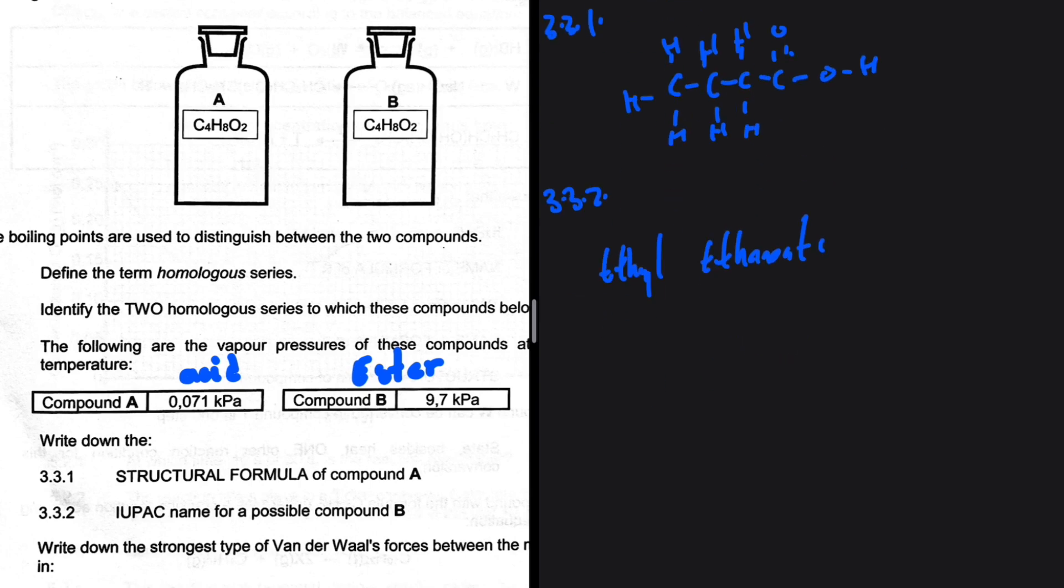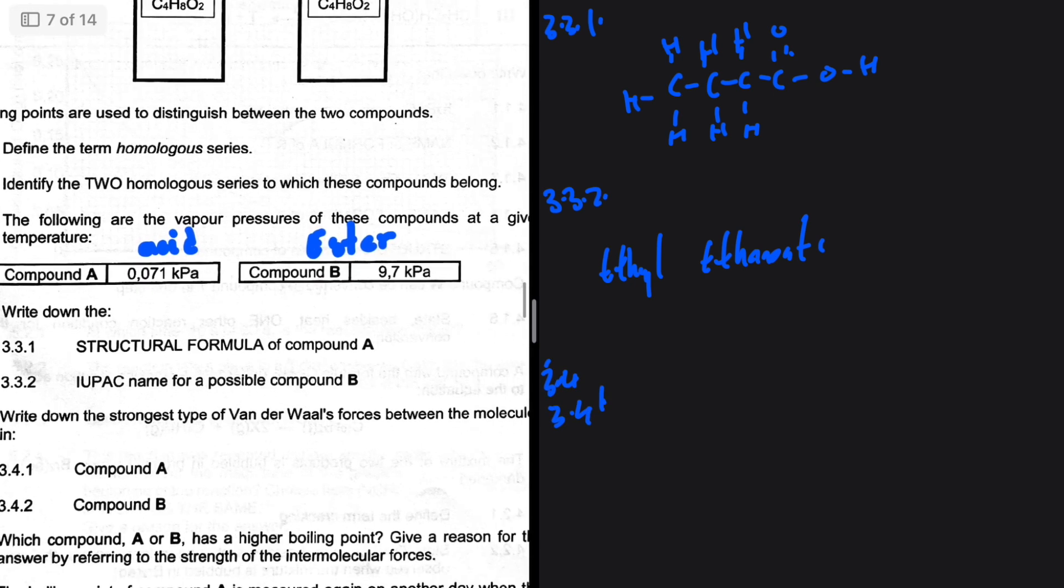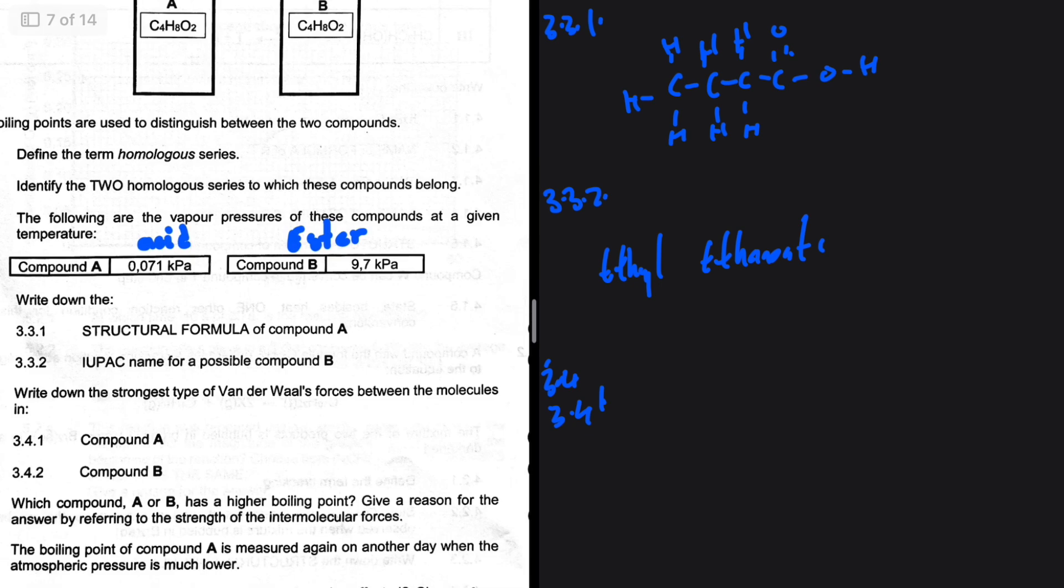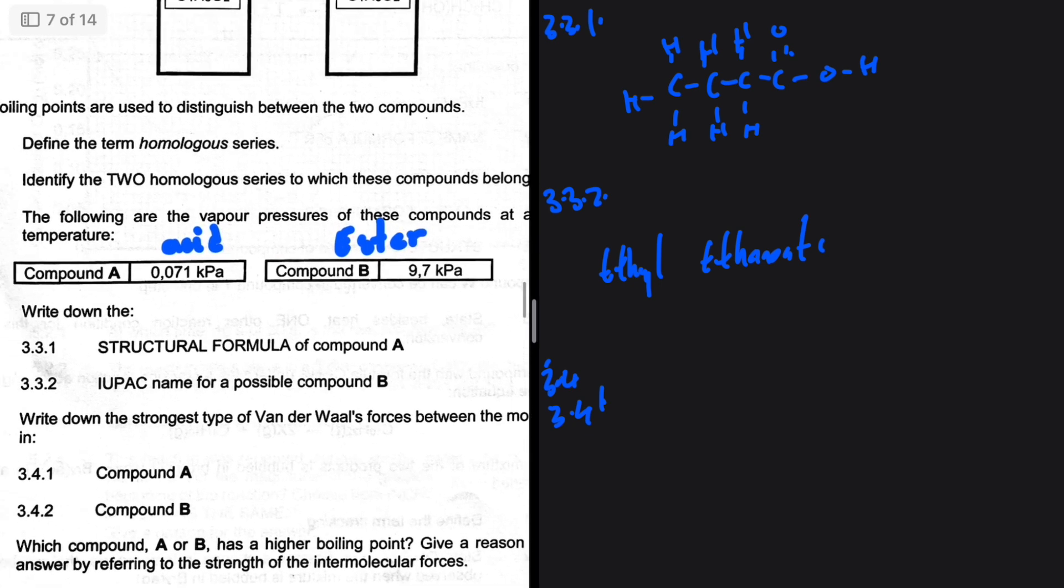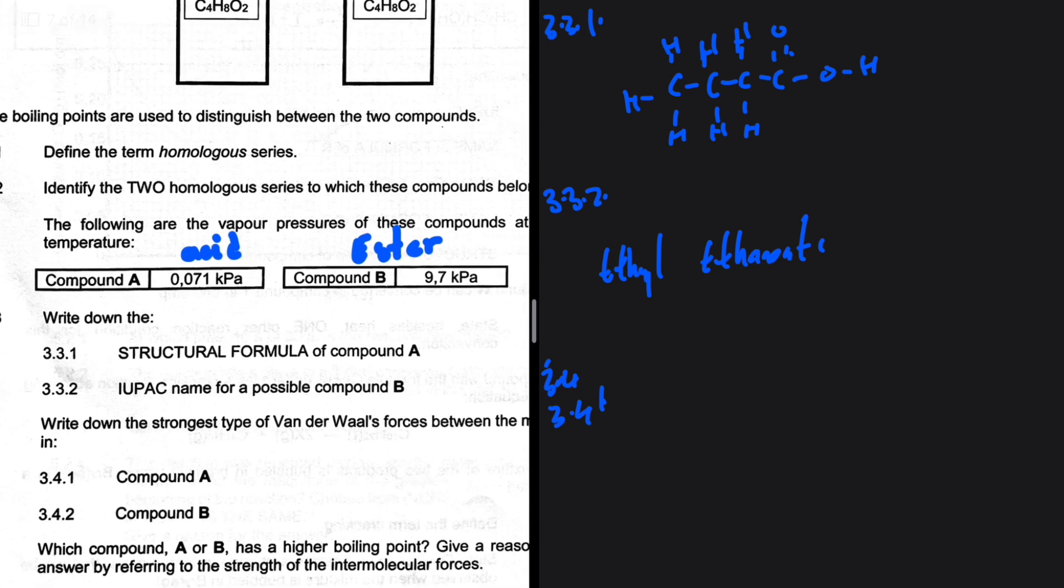3.4.1 write down the strongest type of Van der Waals forces between the molecules in compound A. So compound A is an acid, so the strongest intermolecular force is hydrogen bonding. And then compound B: strongest intermolecular forces in esters is dipole-dipole. So that is the answer to 3.4.2: dipole-dipole.